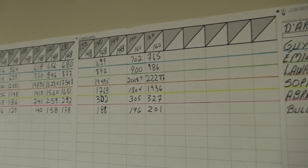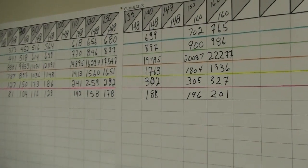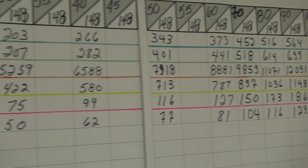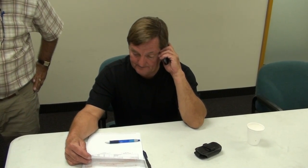160 out of 160. Guy Hamut 765, Émilie Beauchene 986, Laurence Bergman 22,267, Sophie Leroux 1,936, and Abraham Weisfeld 327. That's it.